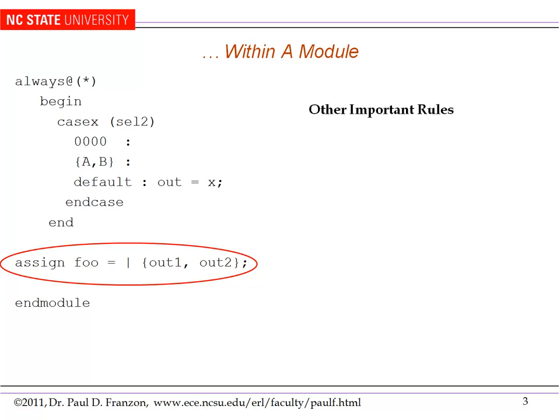Here I have continuous assignment. Continuous assignment can only be used to describe the structure of a piece of logic. Here the structure are the bundles of wires out1 and out2 are being drawn together, and then all those wires are going through an OR gate to produce a 1-bit result. Whenever you have structure, rather than behaviour, it is very useful to use continuous assignment.